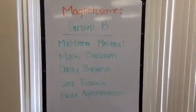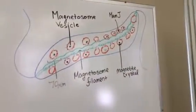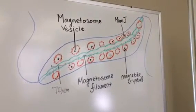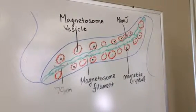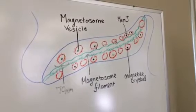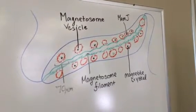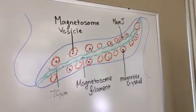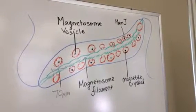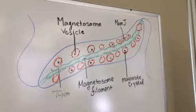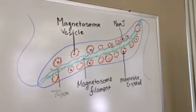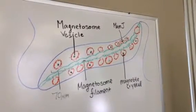A magnetosome is a membranous prokaryotic organelle containing mineral crystals present in magnetotactic bacteria. Magnetosomes allow them to sense and align themselves along a magnetic field. They contain 15 to 20 magnetite crystals that together act like a compass needle to orient magnetotactic bacteria in geomagnetic fields, which eases their search for their preferred microaerophilic environments.